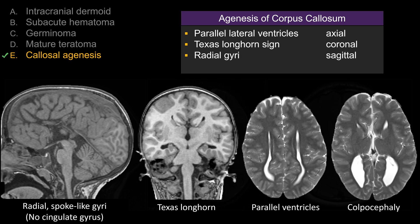This is another example of a classic picture of agenesis of the corpus callosum. On the sagittal view, there is complete absence of the corpus callosum as well as absence of the cingulate gyrus, making this spoke-like radial appearance of the gyri. On the coronal view, again, the Texas longhorn sign — the upturn of the frontal horn of the lateral ventricle with absence of the corpus callosum — parallel appearance and widening of the body of the lateral ventricle, and the classic dilatation of the atrium and the occipital horn of the lateral ventricle, referred to as colpocephaly.